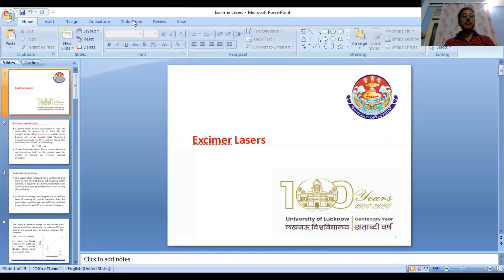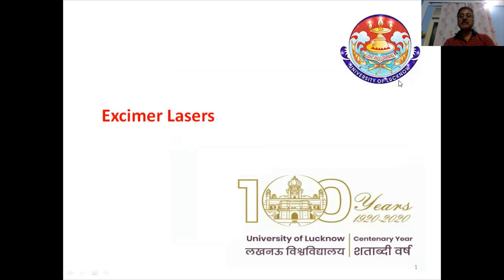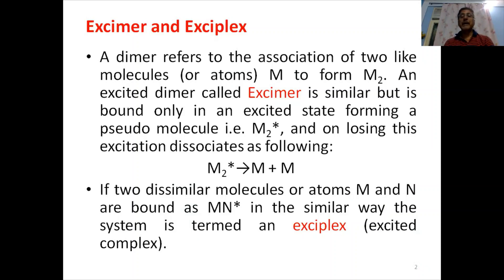Hello, I am Professor NK Pandey, Department of Physics, University of Lucknow. In today's lecture we are going to cover excimer lasers. We have two types of molecules to consider. One is a dimer in which two similar molecules or atoms make an association, like M and M to form M2. If a laser is made out of this kind of molecule M2 of similar atoms or molecules, we call that the excimer laser — basically it is an excited dimer.